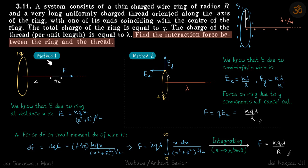Let's use the standard method first. We'll take a small element dx at a distance x and find the force on this element. We need two things: charge dq on this element and electric field due to the ring. The electric field due to the ring is kQx/(x² + r²)^(3/2) and charge on the element is λdx.